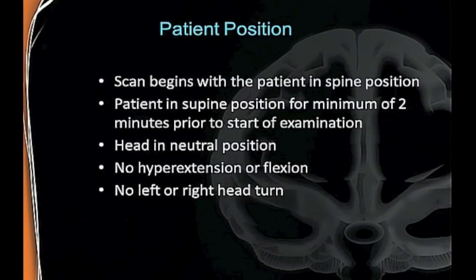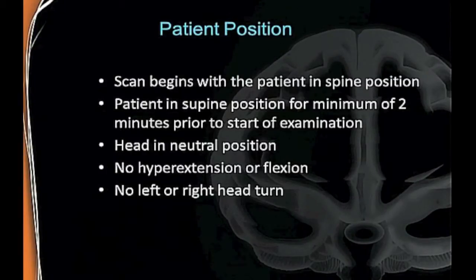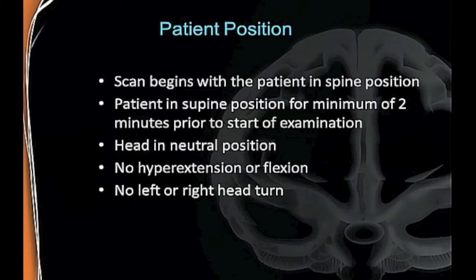For patient positioning, the study always begins in supine position—this is mainly for your CSA and delta CSA factors. When they come in sitting, you put them into supine and then wait a minimum of two minutes for the body's hemodynamic flow to adjust. You need the head in a neutral position—no hyperextension, no underextension, no right or left head turns. Unlike carotid scanning where you turn the head to the side, here we need them in a perfectly neutral position because the muscles directly affect compression on the vein.